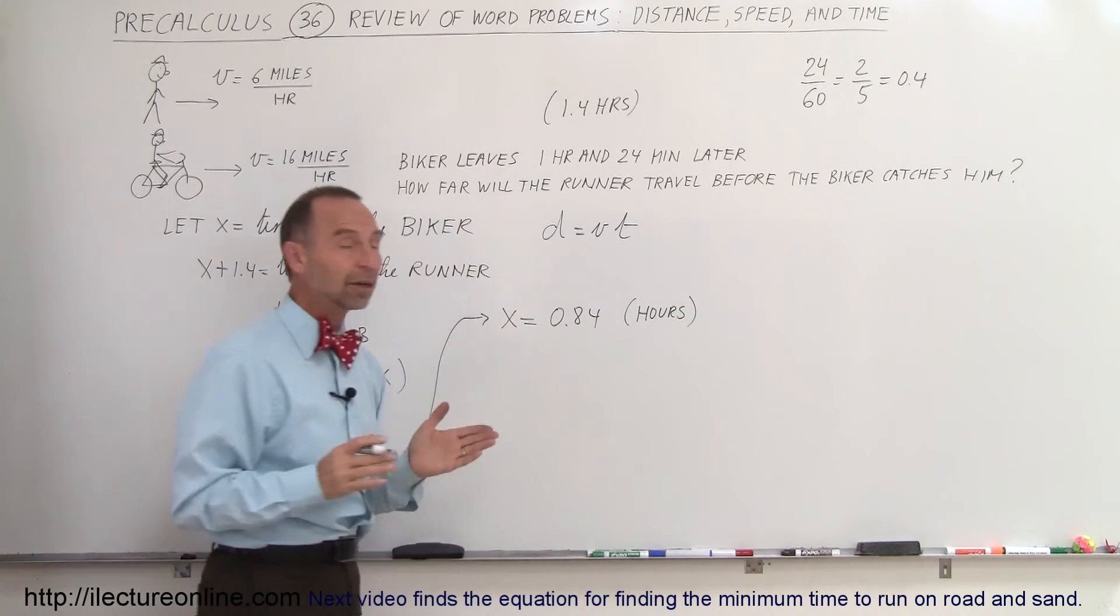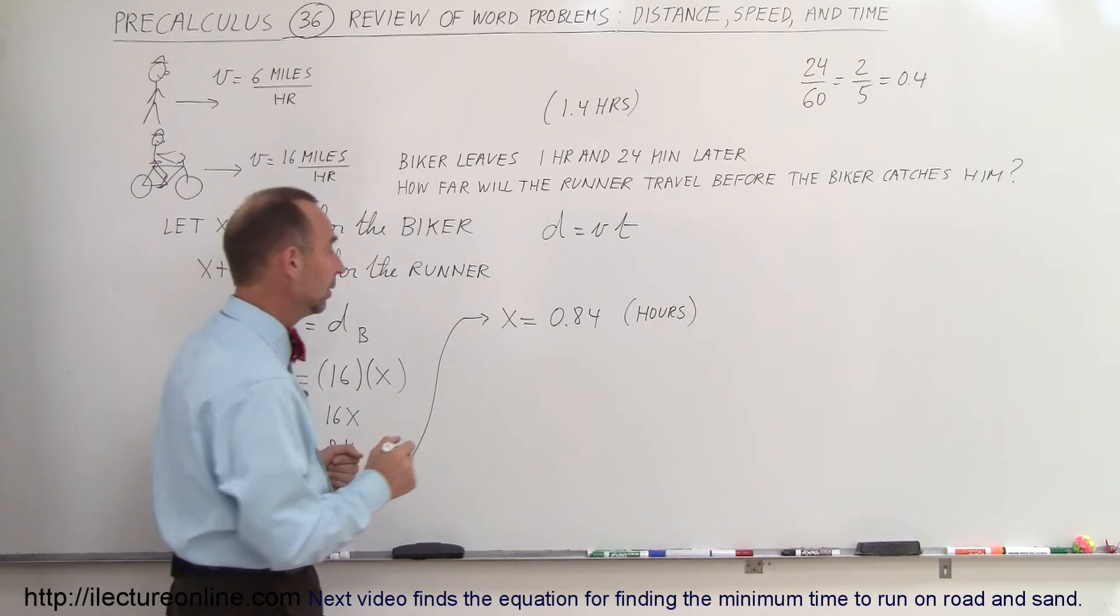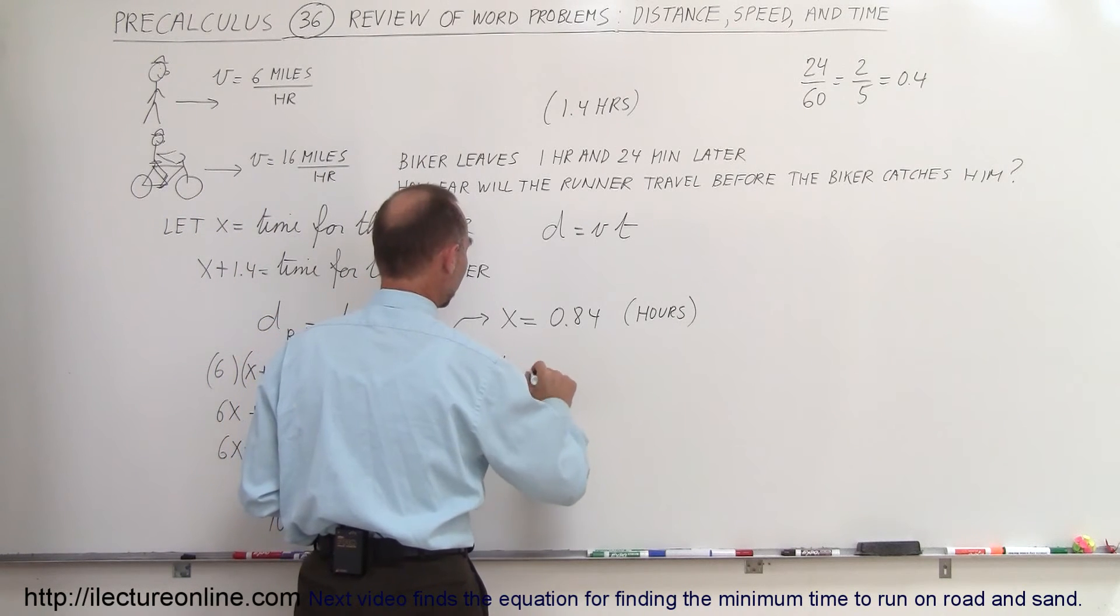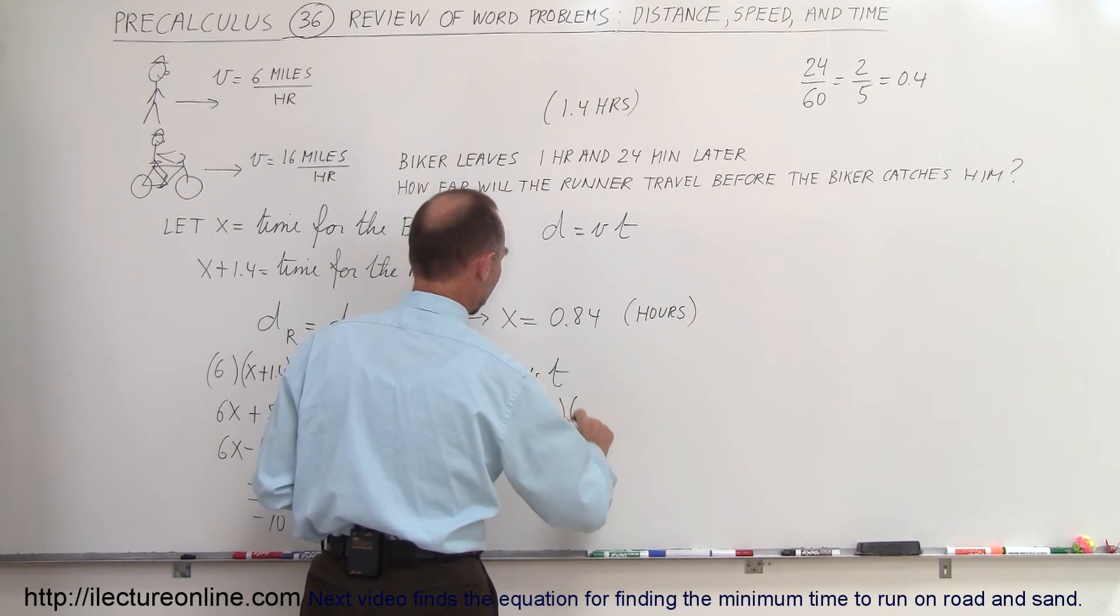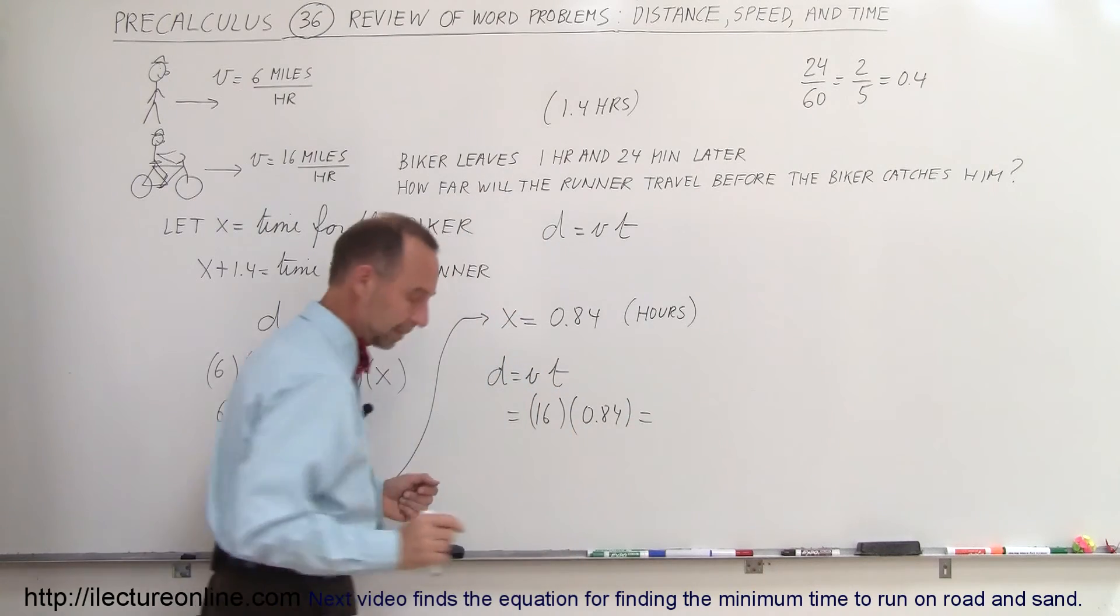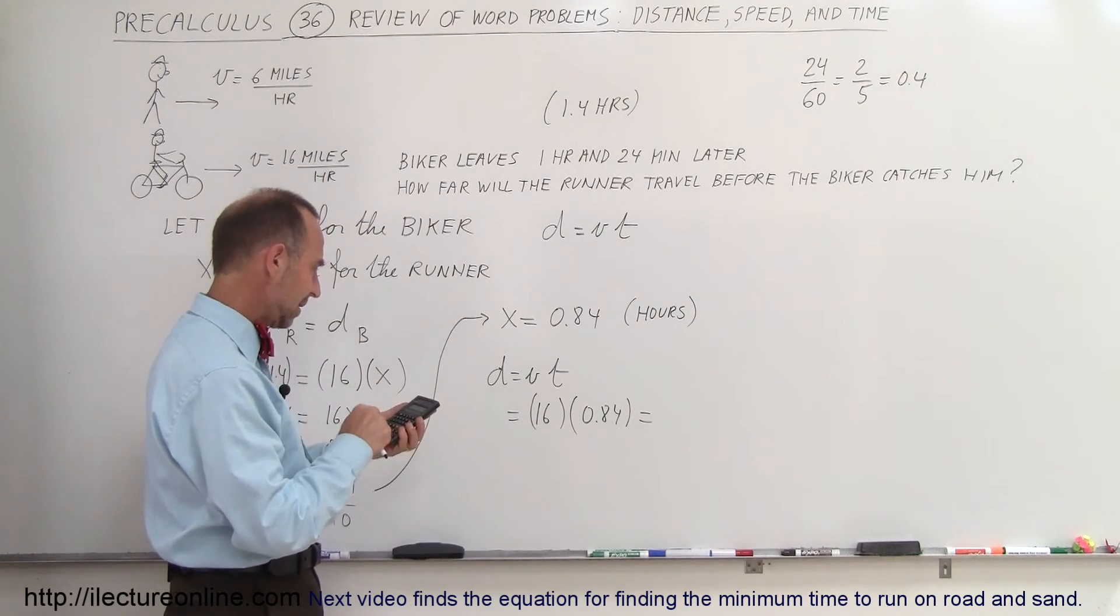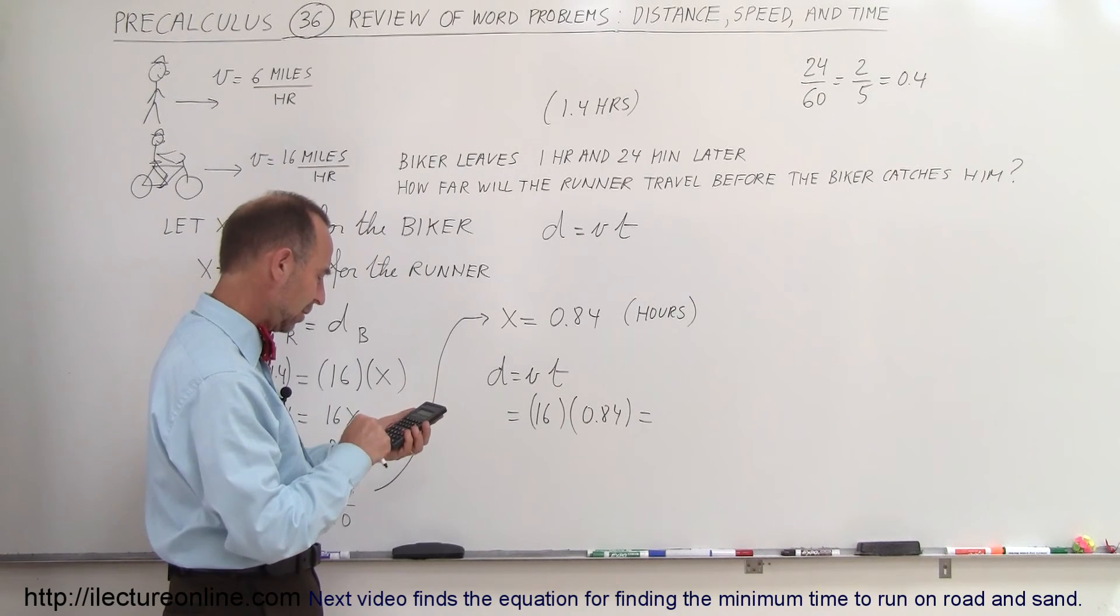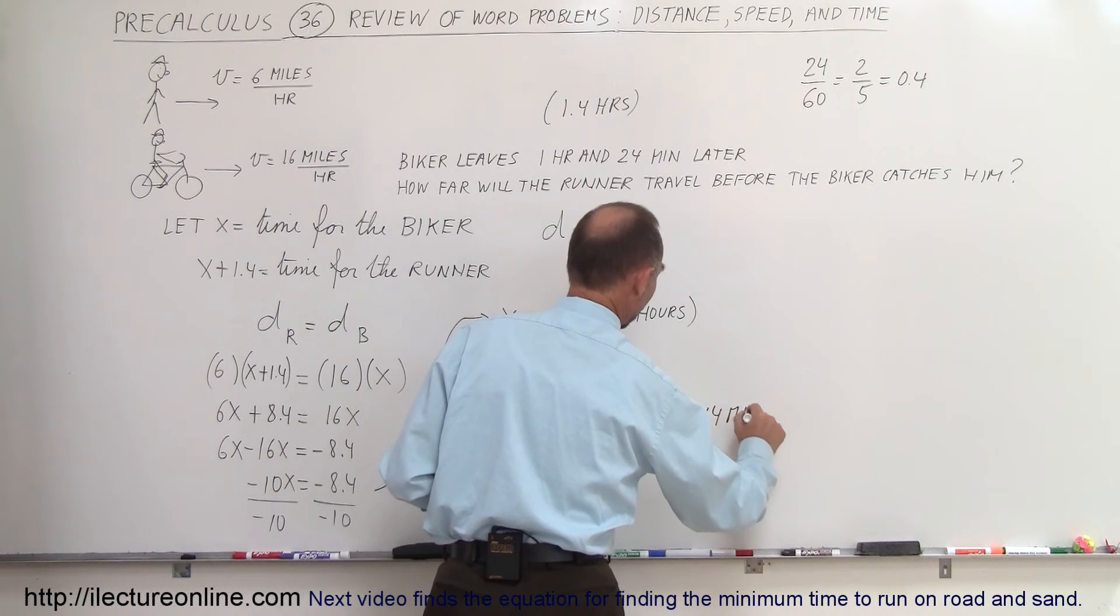So from that we can figure out how far the biker will have traveled before catching the runner. And so since you know that distance equals velocity times time, and for the biker the velocity is 16 miles per hour times the time of 0.84. And let me get a calculator out for that. So we have 16 times 0.84 equals, and that would be 13.44 miles.